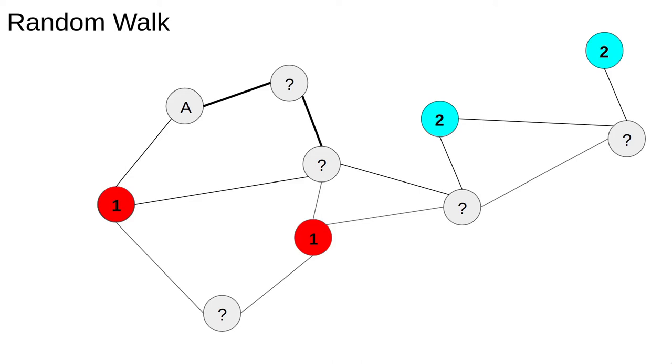In principle we could turn around and go back the way we came, though we sometimes exclude this possibility in a random walk. We stop the walk when we reach a labelled node. Here we have randomly stepped from node A along the network and ended up at a red label.